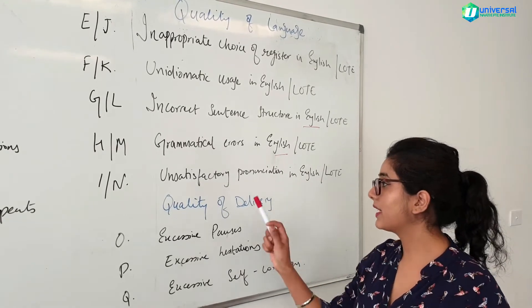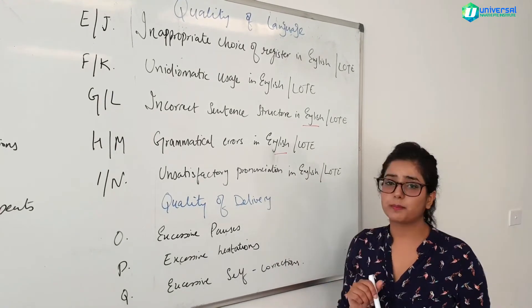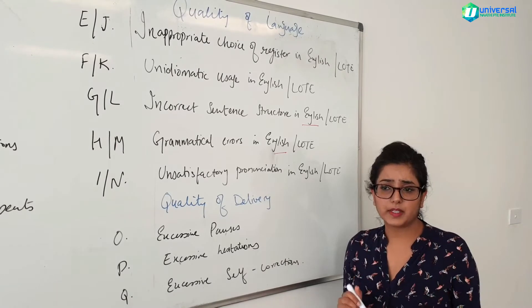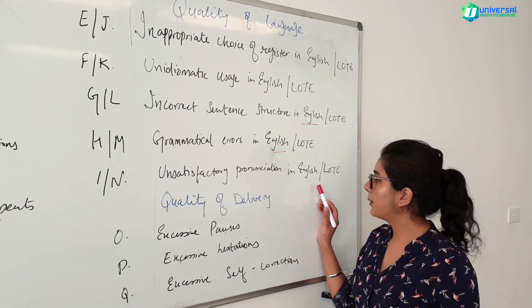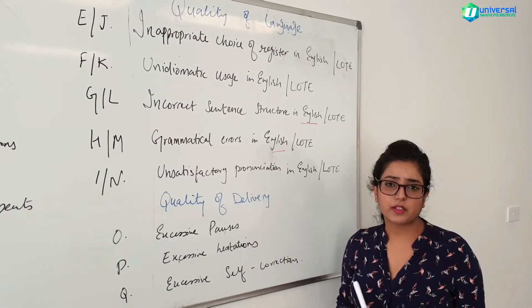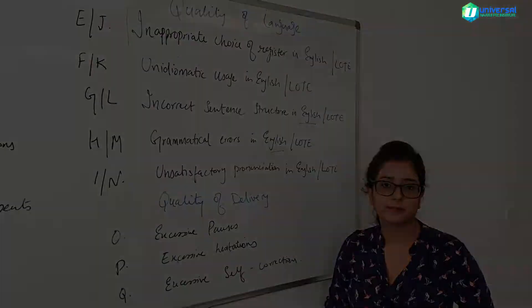Code N is unsatisfactory pronunciation, which is pretty self-explanatory. It is hardly ever an issue among students — they are generally pretty good with pronunciation.